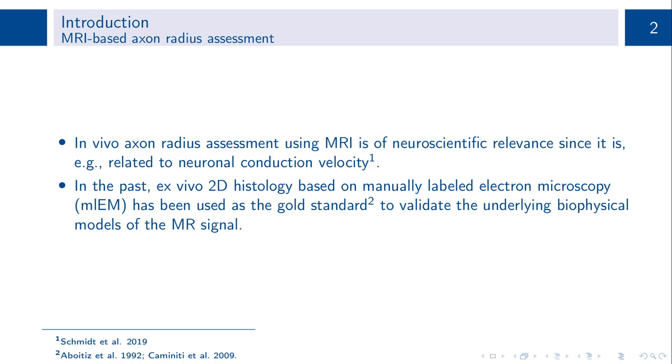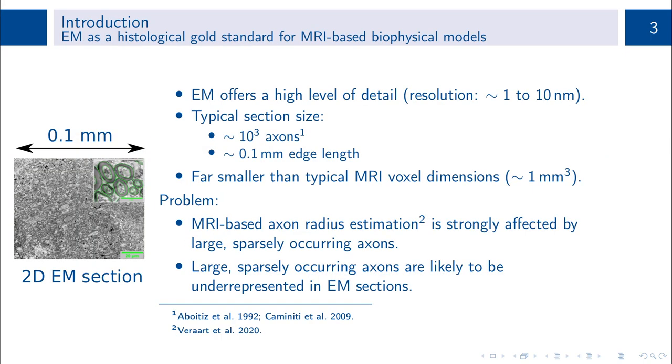In the past, ex vivo 2D histology based on manually labeled electron microscopy, or short EM, has been used as the gold standard to validate the underlying biophysical models of the MR signal. While EM offers a high level of detail, typical sections cover at most a few thousand axons and a spatial extent of 100 microns edge length. Thereby, they are far smaller than typical MRI voxels with an edge length of 1 mm.